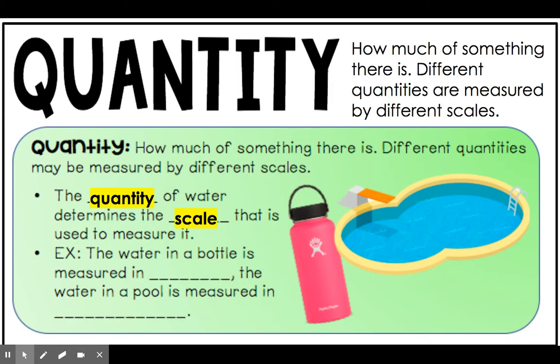Our final word in this cross-cutting concept is quantity. Quantity just means how much of something there is. The important thing to know is that a different quantity of something might be measured by a different scale. For example, we would measure the water in our hydro flasks in a very different quantity than the water in our swimming pool. A water bottle label tells you how many ounces it can hold, but you would never buy a swimming pool based on ounces — pool water is measured in gallons. If we measured a swimming pool in ounces, it would hold hundreds of thousands of ounces, and that would not be a logical scale to quantify that amount of water.